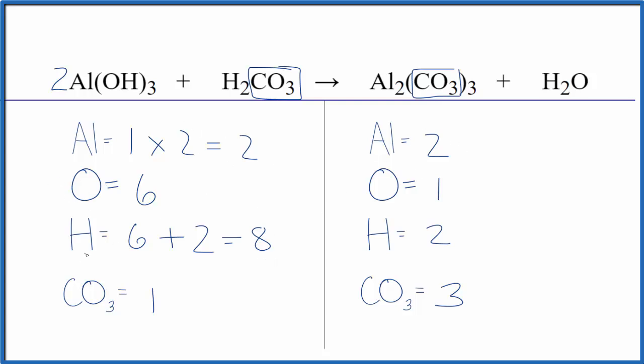These are different. But again, we're leaving the oxygen and hydrogen to last. Let's balance the carbonate. I have one here and three here. I'm going to put a three in front of the carbonic acid. One carbonate times three. That'll give me three carbonates. So those are balanced.